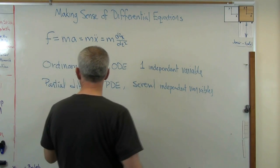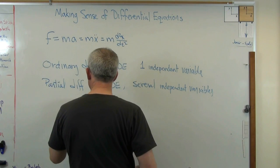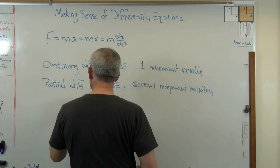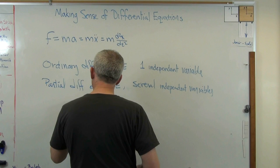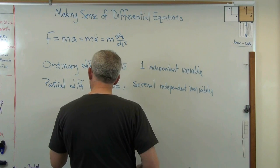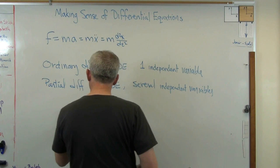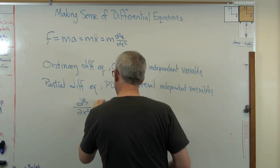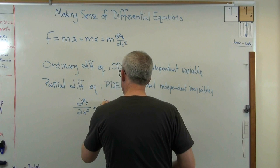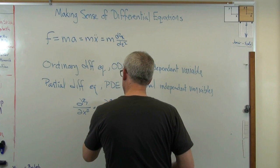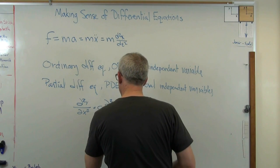For an example of a PDE, here's one: partial squared y over partial x squared equals c times partial squared y over partial t squared.